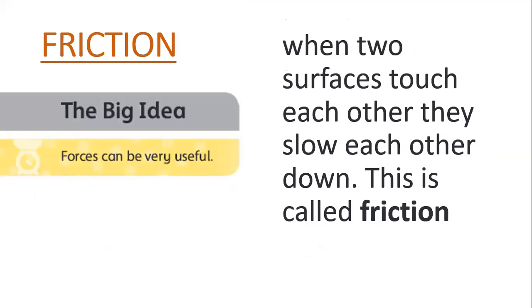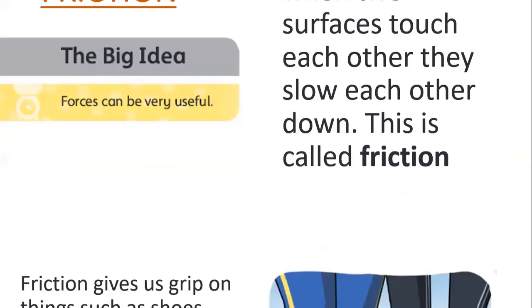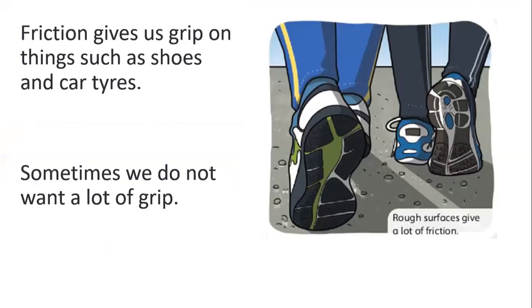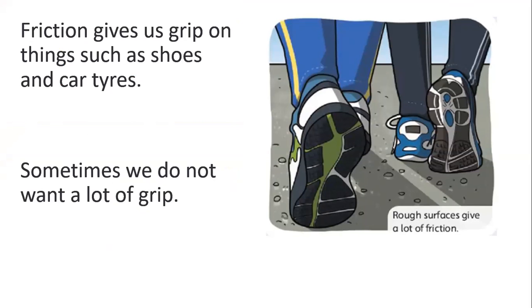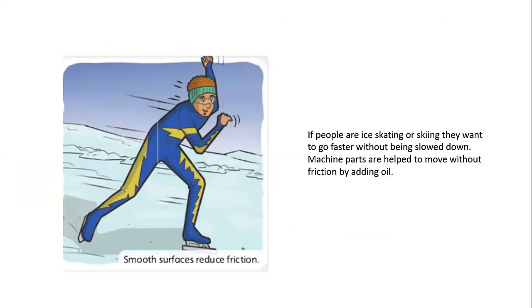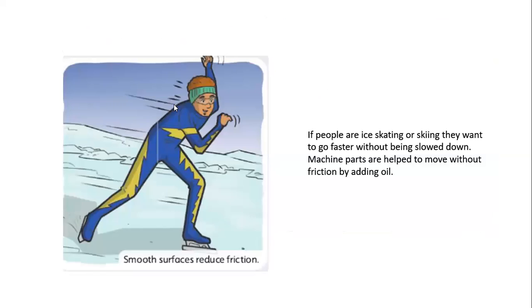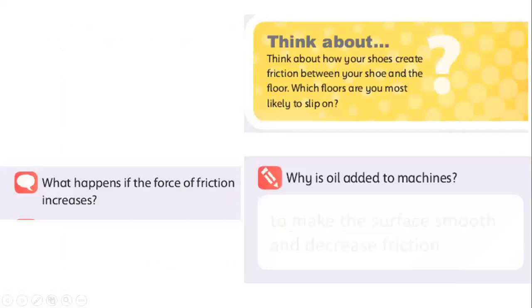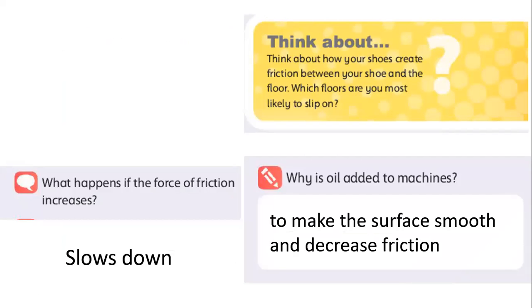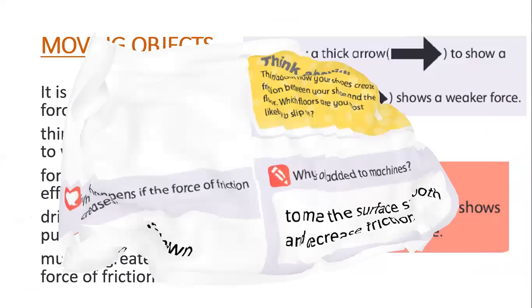Forces can be useful - we will learn why. Friction changes according to surface area. If the surface is rough, there will be a lot of friction. If the surface is smooth like snow, there will be less friction and faster movement. On rough surfaces there is a lot of friction and movement will be slow, but on snow during ice skating with special shoes there is less friction. If the force of friction increases, it slows down the movement.